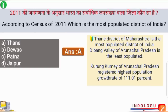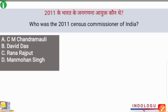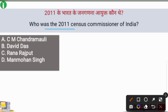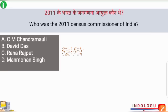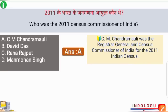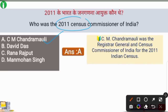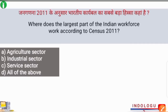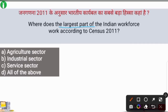Next question: who was the 2011 census commissioner of India? The correct answer is option A — C.M. Chandramauli. C.M. Chandramauli was the Registrar General and Census Commissioner of India for the 2011 Indian census.